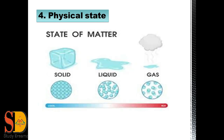The fourth property is physical state — physical state means the form of a material. We have seen that water exists in three different forms: water, ice, and water vapors. The water we drink is in the liquid state. When we boil water, it changes state and transfers into water vapors or steam, which is the gaseous state. When we freeze water, we get ice, which is the solid state. Most substances exist in three states: solid, liquid, and gas.